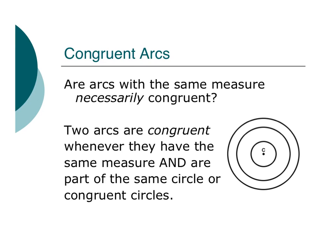So going off that note, are arcs with the same measure necessarily congruent? Remember, arc measure has to deal with degrees. So if they're both 30 degrees, are they necessarily congruent? Well, only if they're part of the same circle or congruent circles.